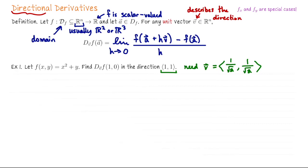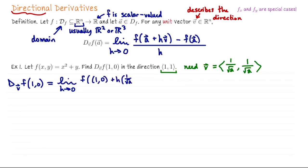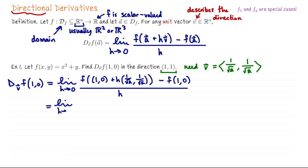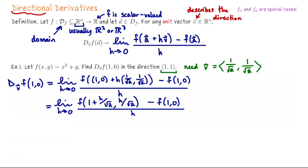We have our function and our point. The point a here is (1, 0). We can compute the limit of the difference quotient. So this directional derivative of f at the point (1, 0) in the direction of (1/√2, 1/√2) is the limit as h goes to zero of f of (1, 0) plus h times (1/√2, 1/√2), minus f evaluated at (1, 0), all over h. Simplifying the first input, that's f of (1 + h/√2, h/√2). Then we subtract off f at (1, 0) and divide the result by h.